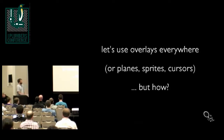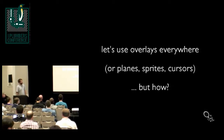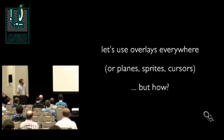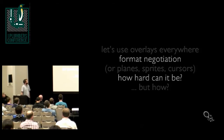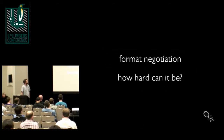So we've decided to use overlay planes, sprites, or cursors — pick any of those names. How do we actually go about doing that, and what are the problems we end up facing? The first problem is format negotiation. On the face of it it seems pretty easy — you have a format, job done.